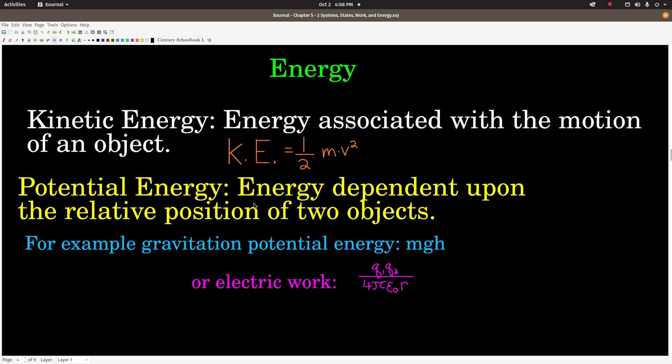The potential energy is an energy that depends upon the relative position of two objects. There are several different formulas for potential energy depending upon its source. For example, like we were talking about gravitational potential energy, the formula for that is mgh - mass times the gravitational constant times height distance.